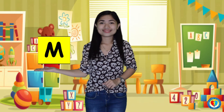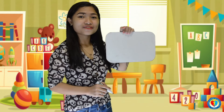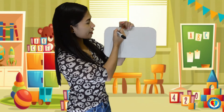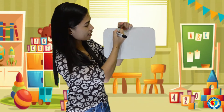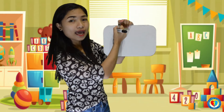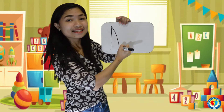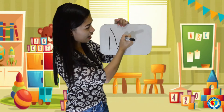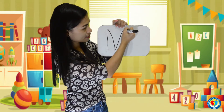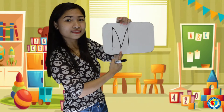This is the big letter M. And this one is the small letter M. Now, let's try to write the big M. Let's start from the top and make a straight line down to the bottom and go back to the top and make a slant line down to the right. Next, let's make a slant line up and make a slant line down to the bottom. This is the big letter M.